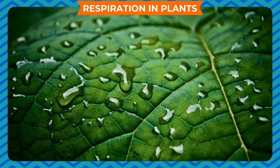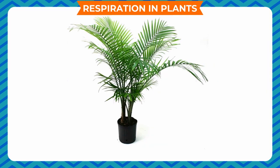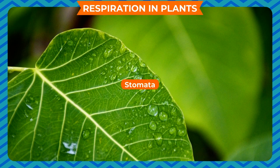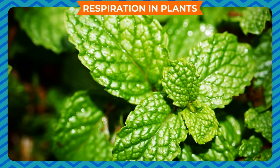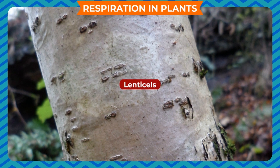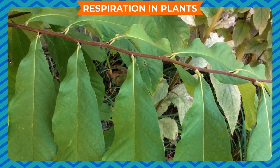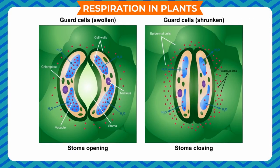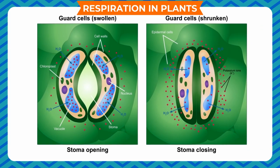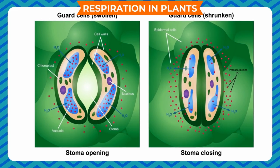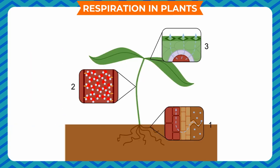Respiration in plants: Like all other living organisms, plants also respire. Leaves have tiny pores called stomata on their lower surface through which air can easily enter. Plants also have tiny openings called lenticels on their stem and roots for breathing. Stomata trap air and the exchange of gases takes place inside the plant cell. The opening and closing of stomata is brought about by the expansion and contraction of guard cells, which expand and contract due to the flow of water in and out of the cell.